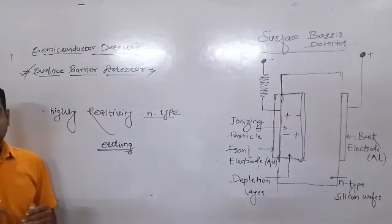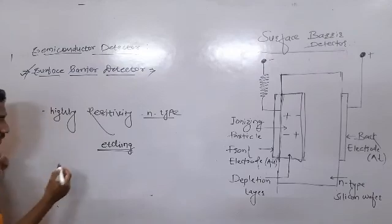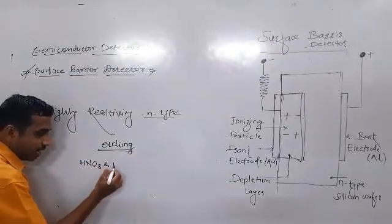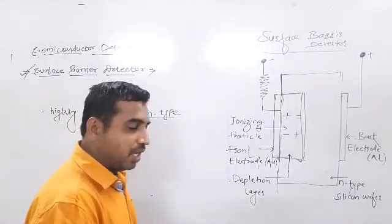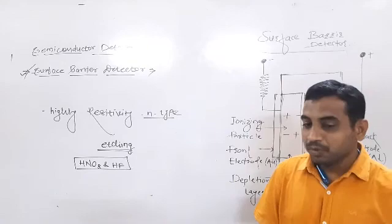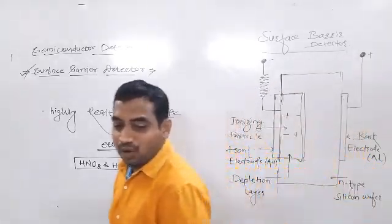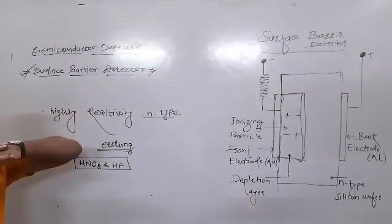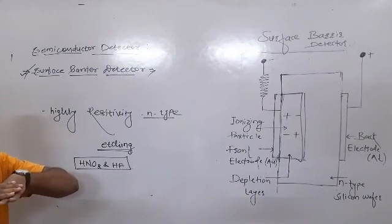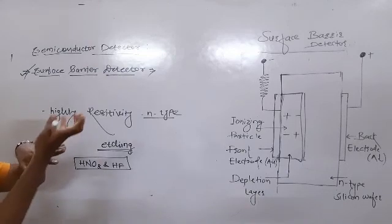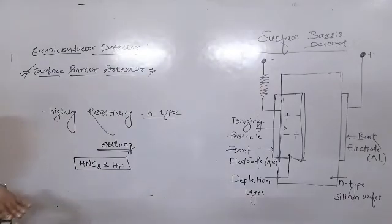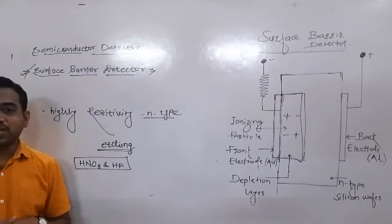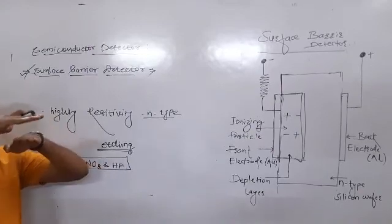The etching process is generally carried out using a mixture of the material and HF. The etching of the material is carried out chemically. The N-type silicon surface is exposed in air, and after the exposure in air, the surface undergoes oxidation.